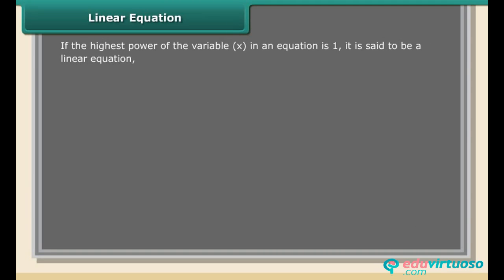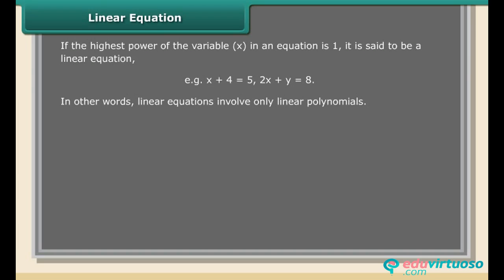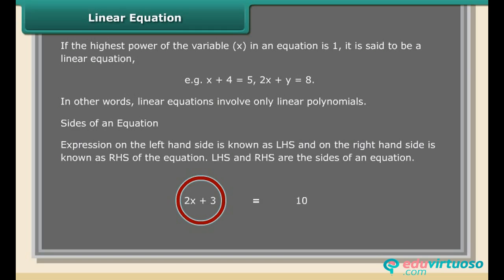If the highest power of the variable x in an equation is 1, it is said to be a linear equation — for example, x + 4 = 5, or 2x + y = 8. In other words, linear equations involve only linear polynomials. The expression on the left-hand side is known as LHS, and on the right-hand side is known as RHS of the equation.